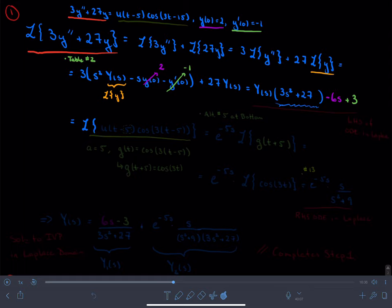So I take the Laplace transform of u of t minus 5 times the cosine of 3 times t minus 5 quantity. So there's my Laplace transform. That's me taking the Laplace transform of this right-hand side.